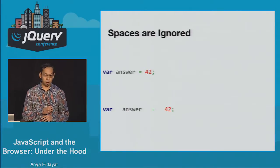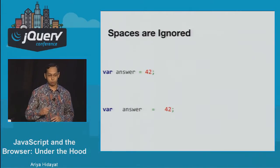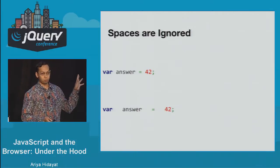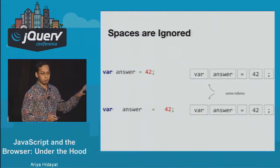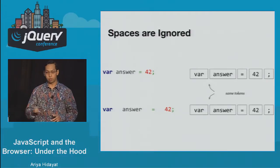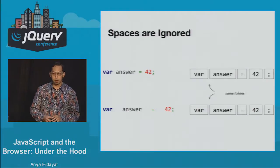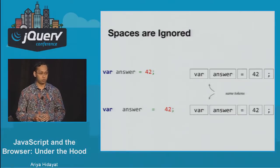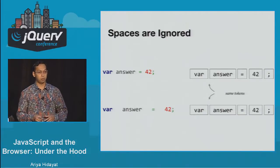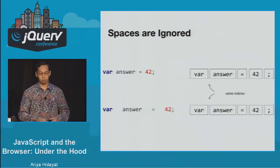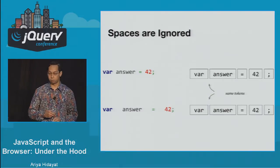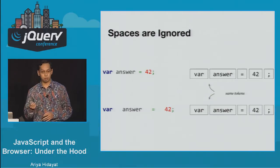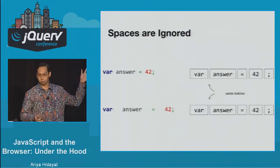Spaces are completely ignored, so it doesn't matter whether you have one space or two spaces. These two lines of code produce exactly the same stream of tokens. That's why in tools that minify or obfuscate your code, all the extra white spaces are removed — it makes no difference to how the program will be executed. The JavaScript engine only sees the list of tokens.